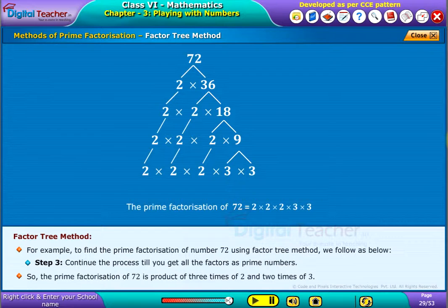So the prime factorization of 72 is the product of three times of 2 and two times of 3.